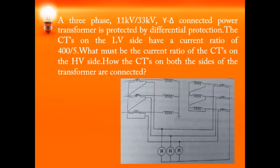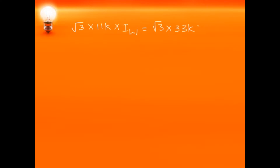Next is a 3-phase 11 kV / 33 kV star-delta connected power transformer protected by a differential protection scheme. The CTs on the LV side have a current ratio of 400/5. We need to find the CT ratio on the HV side and the connection on both sides. Considering primary current as IL1 and secondary as IL2: root 3 × 11 kV × IL1 = root 3 × 33 kV × IL2.